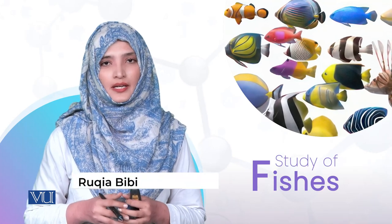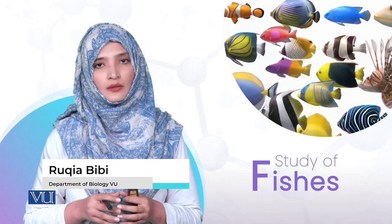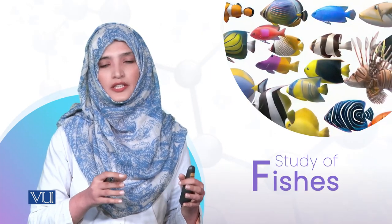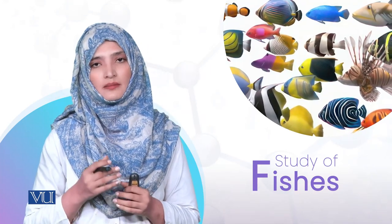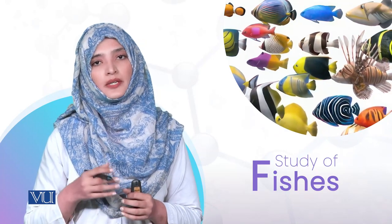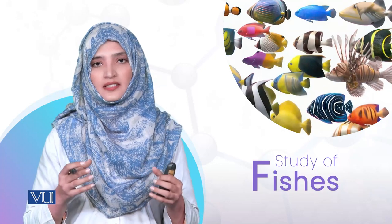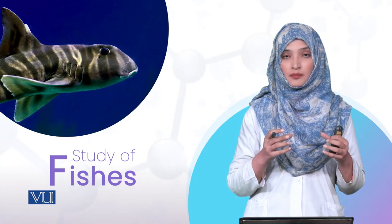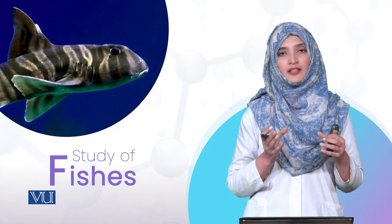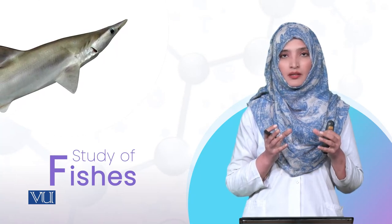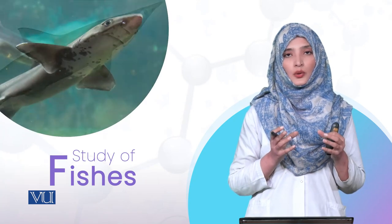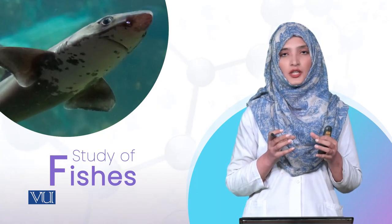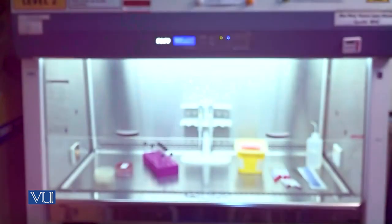Summary: Agnatha اور Gnathostomata کی divisions کے بارے میں discuss کیا۔ جن fishes میں jaws exist کرتی ہیں ان کی body structure، appearance اور feeding mechanism کیا ہے۔ Agnathans میں jaws نہیں ہیں تو وہ کیسے نظر آتی ہیں اور body morphology کیا ہے۔ Dogfish میں mouth ventral side پر present ہوتا ہے اور یہ voracious اور predacious feeders ہیں جو کوئی بھی fish یا feeding organism آئے تو اسے engulf کر لیتے ہیں۔